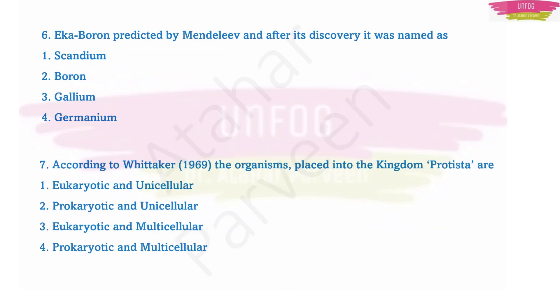Question number six: eka-boron predicted by Mendeleev, after its discovery it was named as... What was eka-boron named? It was named as gallium and it was predicted by Mendeleev.